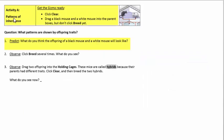Now let's look at activity A, number one. Predict what do you think the offspring of a black mouse and a white mouse will look like. So if we grab a black mouse and a white mouse, write down what you think the offspring will look like.